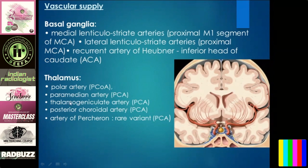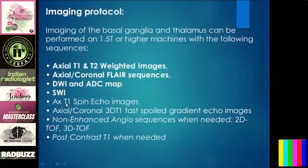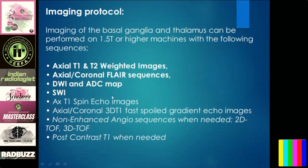Now the imaging protocol — very important. I request residents to sit in front of the console when the technician is doing the scanning. The technician will ask: I am seeing some abnormality on T1 or T2, what further sequences should I do? With good knowledge of sequences, you can guide the technician. When seeing hyperintensity in basal ganglia or thalamus on T2 or T1, always recommend a coronal FLAIR sequence, followed by DWI and corresponding ADC mapping, and a susceptibility-weighted image.